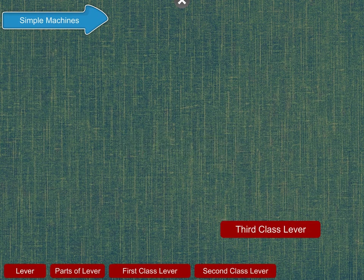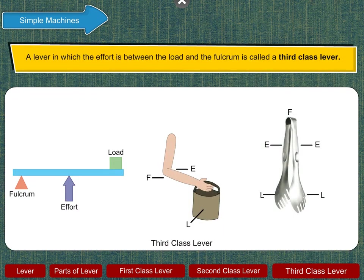A lever in which the effort is between the load and the fulcrum is called a Third Class Lever.